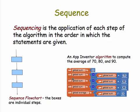Let's look a little more closely at these with some examples from App Inventor. Here's an example of a sequence algorithm in App Inventor. In this case, it's an algorithm to average three numbers. We start with an initial sum set to zero. We add 70. We add 90. We add 80. And the average then is that sum divided by three. So that's just the sequence of steps.